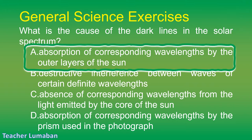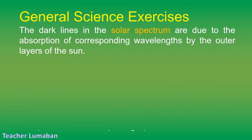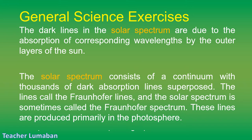The correct answer is Letter A: absorption of corresponding wavelengths by the outer layers of the sun. The dark lines in the solar spectrum are due to the absorption of corresponding wavelengths by the outer layers of the sun. The solar spectrum consists of a continuum with thousands of dark absorption lines superposed, called the Fraunhofer lines. These lines are produced primarily in the photosphere.